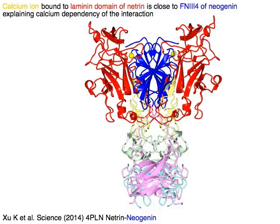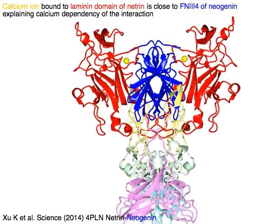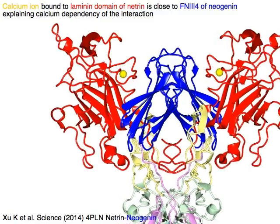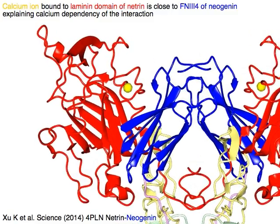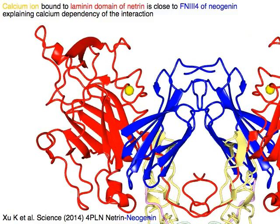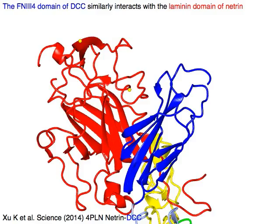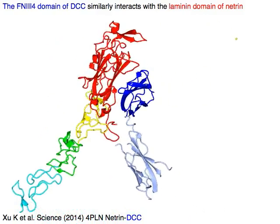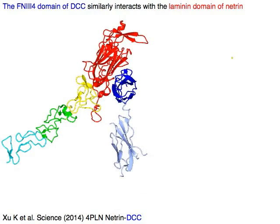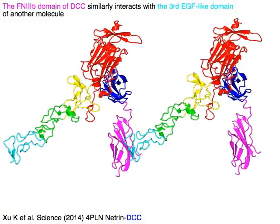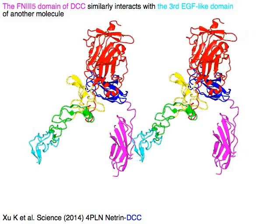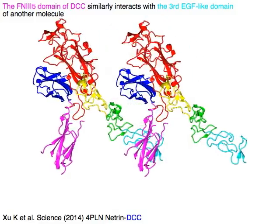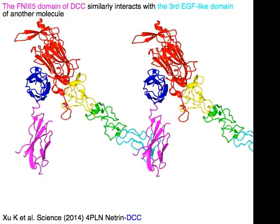A calcium ion in yellow, bound to the laminin domain of Netrin in red, is close to FNIII-4 of Neogenin in blue, explaining the calcium dependency of the interaction. The FNIII-4 domain of DCC in blue similarly interacts with the laminin domain of Netrin in red. The FNIII-5 domain of DCC in magenta similarly interacts with the third EGF-like domain of another molecule in cyan.